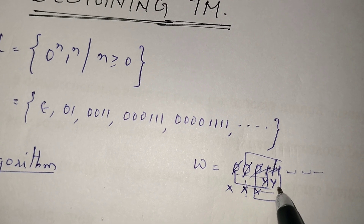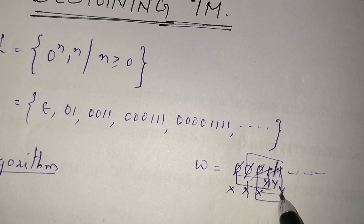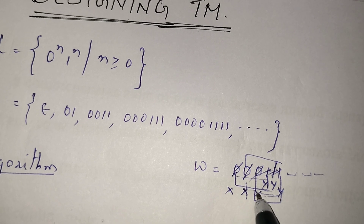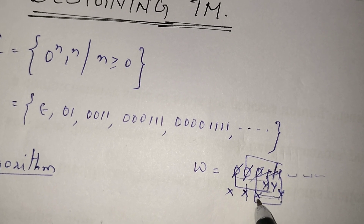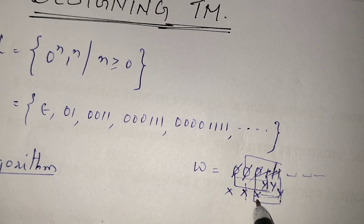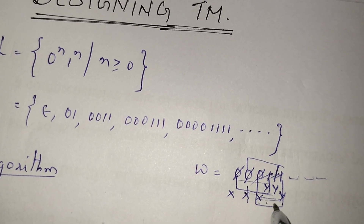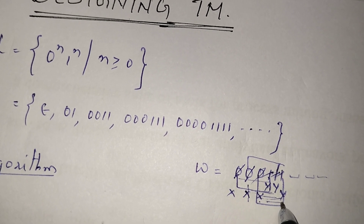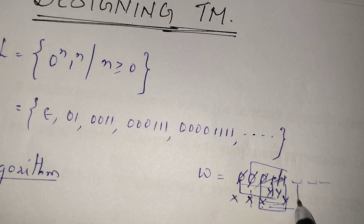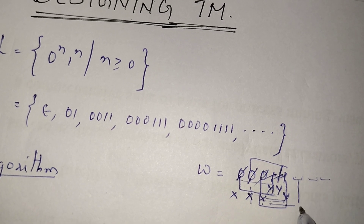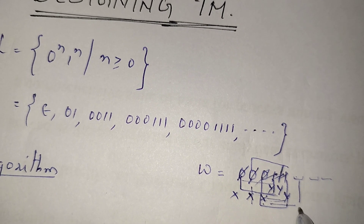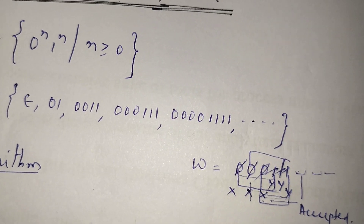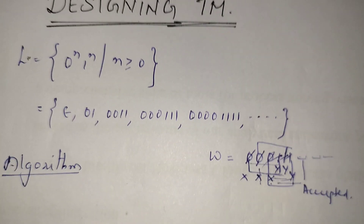Don't do anything when seeing y. Whenever I see a 1 just replace it with y and keep moving towards left. Until I see x, don't do anything — just keep as it is. Then move towards right. In the right direction I am not seeing any 0, only y. So keep moving towards right until the pointer is pointing to the blank symbol. If I see a blank symbol, don't do anything — that means the string is accepted.